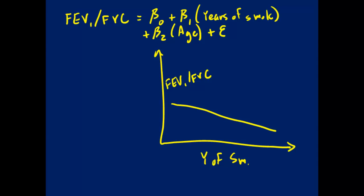Let's put age into our visualization by adding a third axis. Age increases with the arrow — bigger ages over here, younger ages over here. The years of smoking is also increasing in the direction of the arrow, as is the FEV1 to FVC ratio. Now, because we have two predictor variables and one outcome, the structural part of our model, instead of being a line, is going to be a plane.